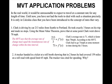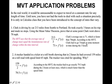A trucker handed in a ticket at a toll booth showing that in two hours he had covered 159 miles on a toll road with a speed limit of 65 miles per hour. The trucker was cited for speeding. Why? His average rate is 159 divided by 2, which gives 79.5 miles per hour. By the MVT, the trucker had to go exactly 79.5 miles per hour at least once during the two hours, which is much faster than the speed limit of 65.